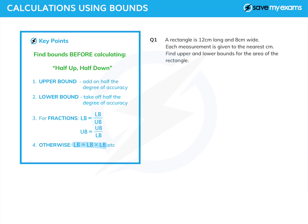Otherwise, the obvious things happen: lower bound is the product of two lower bounds, and the upper bound is the product of two upper bounds. And remember, always to find the bounds before you do any calculating.